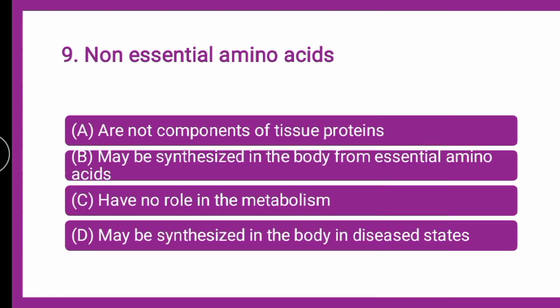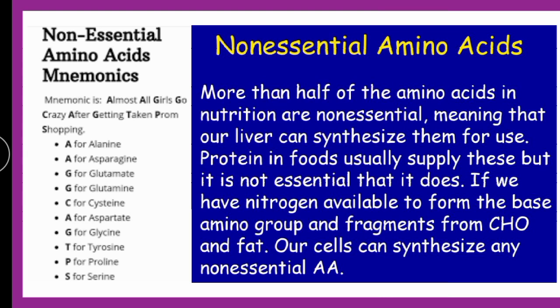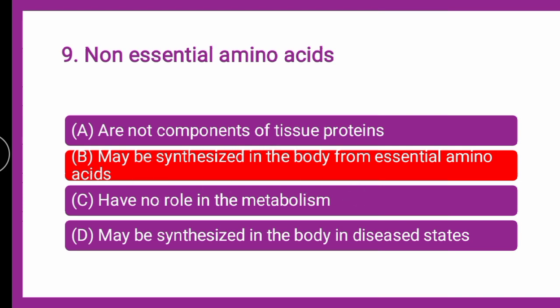Next question: non-essential amino acids are — whether they are not components of tissue proteins, whether they may be synthesized in the body from essential amino acids, whether they have no role in metabolism, or may be synthesized in the body in disease state. The mnemonic is: 'Almost all the girls go crazy after getting taken from shopping' — A for alanine, second A for asparagine, and so on. Our cells can synthesize non-essential amino acids, and there are chances they may be synthesized from essential amino acids.